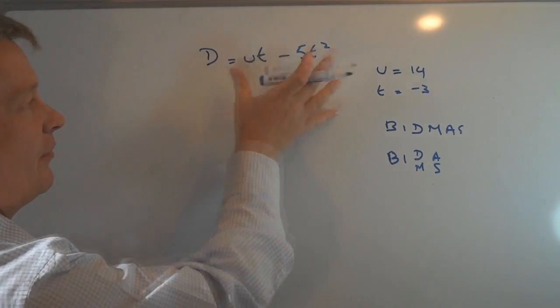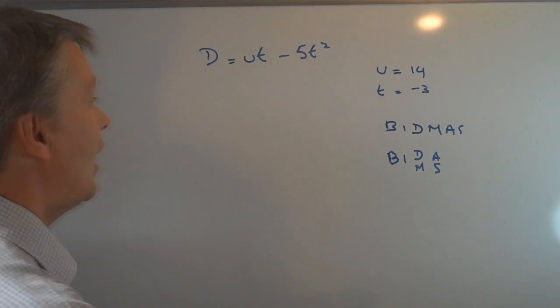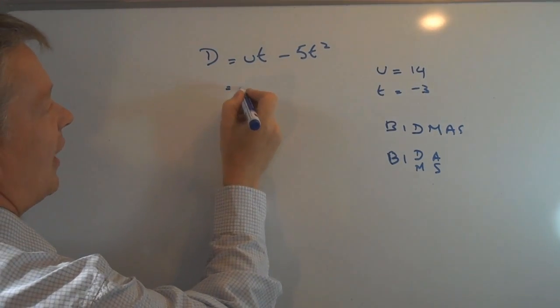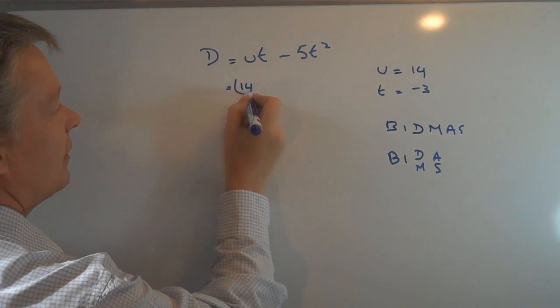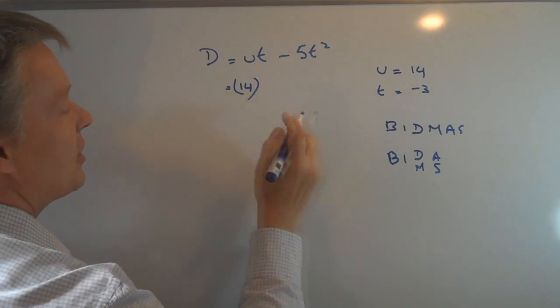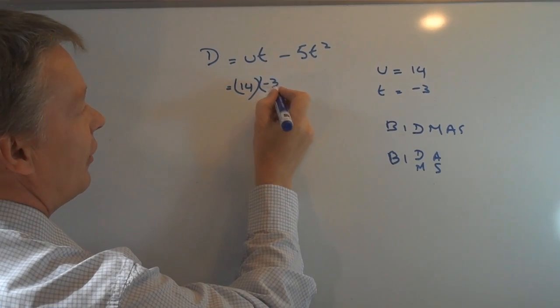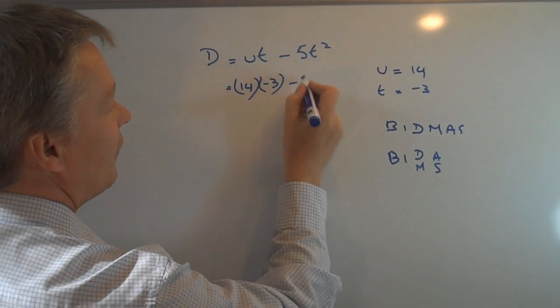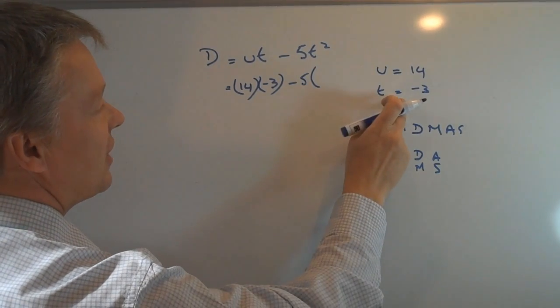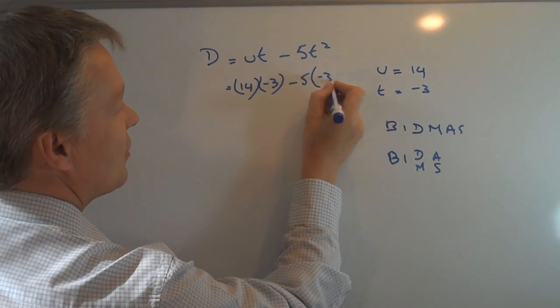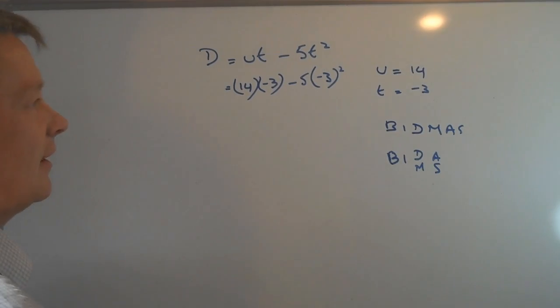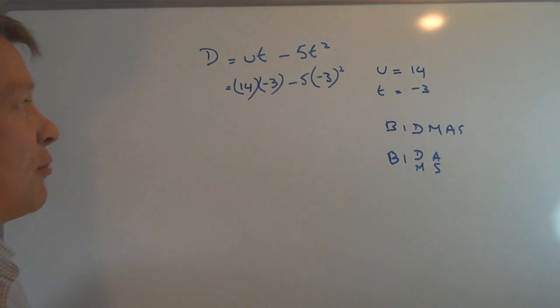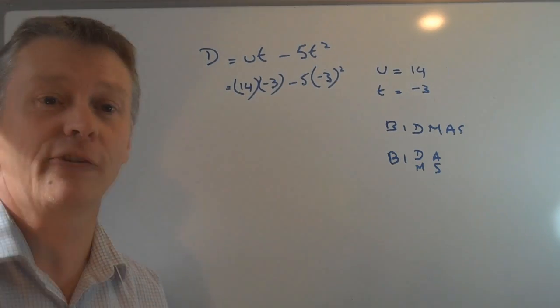Okay, so back to this particular formula. I've got a value of u as 14, so I'm going to write that as 14 times t which is minus 3. And then on this side I've got minus 5 and I've got t squared, so that's minus 3 squared. And again as I mentioned before it's good for you just to keep things in brackets. It'll make things a little bit easier for you.